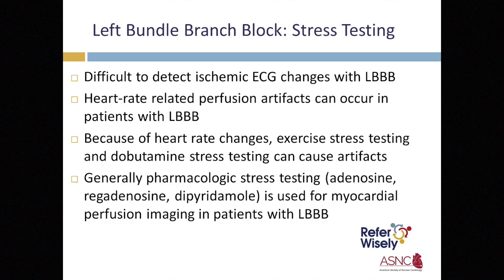Generally, we try to have the patient exercise for both radionuclide and echocardiographic stress testing. However, we make an exception for those with left bundle branch block for two reasons. First, it is difficult to detect ischemic ECG changes in the presence of the repolarization abnormalities of left bundle branch block. Second, perfusion and wall motion abnormalities can be accentuated with increases in heart rate, as can occur with exercise or dobutamine. As a result, cardiologists generally perform vasodilator stress tests with adenosine, regadenosine, or dipyridamole in conjunction with radionuclide imaging in patients with left bundle branch block.